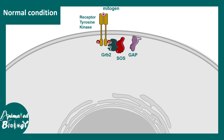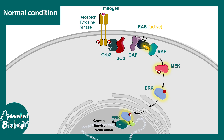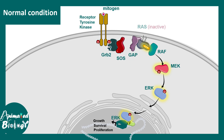In a normal scenario, a mitogen activates RAS, which further activates RAF, then MEK, then ERK, and ultimately the pathway converges on growth, survival, and proliferation. When the mitogen is no longer present, a GTPase activator protein stops RAS and RAF is inhibited, shutting down the entire pathway. This on-and-off switch ensures regulated growth; when RAF becomes constitutively active due to mutation, that regulated control is lost and cancer results.